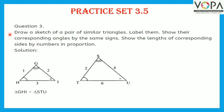Question 3: Draw a sketch of a pair of similar triangles. Label them. Show their corresponding angles by the same signs. Show the lengths of corresponding sides by numbers in proportion. Here is the sketch of a pair of similar triangles. Triangle IGH and triangle STU are the labels of these two triangles.